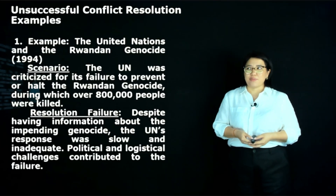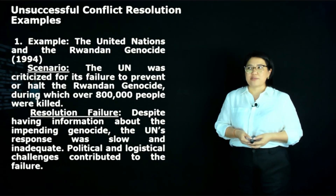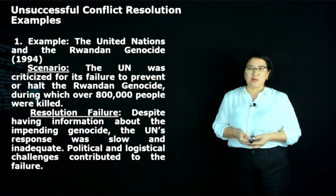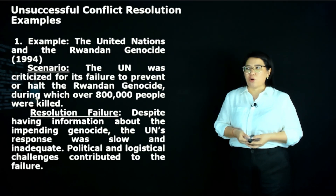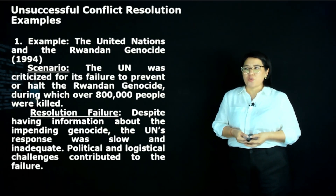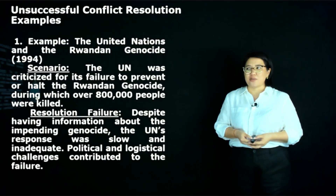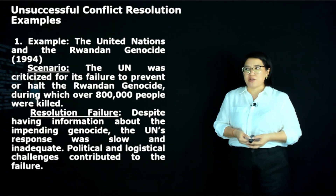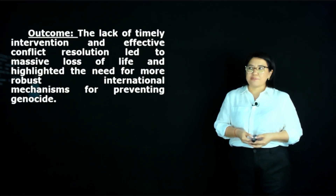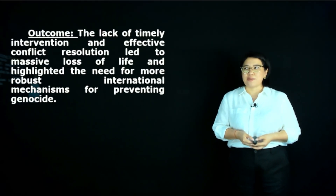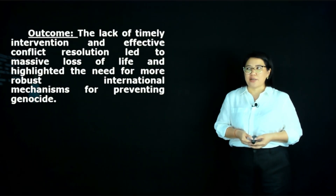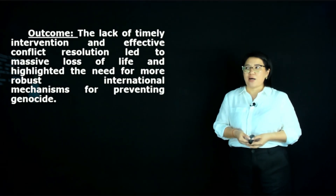An unsuccessful conflict resolution example is the United Nations and the Rwandan genocide in 1994. The UN was criticized for its failure to prevent the genocide, in which over 800,000 people were killed. Despite having information about the impending crisis, the UN's response was slow and inadequate, with political and logistical challenges contributing to the failure. The lack of timely intervention led to massive loss of life.